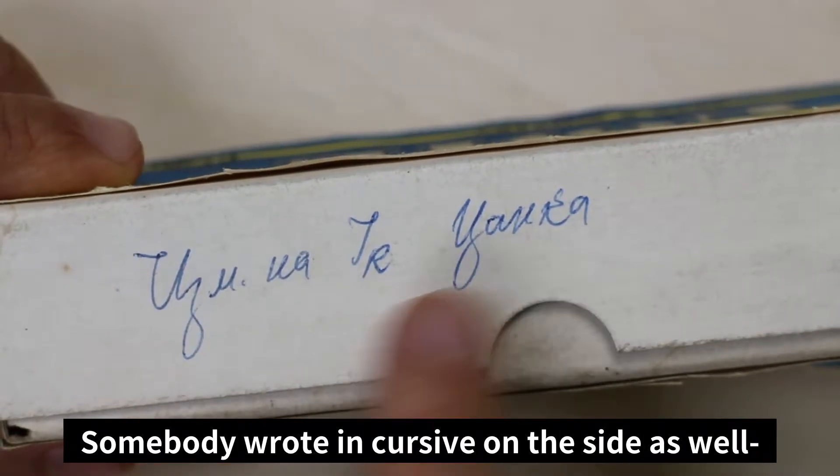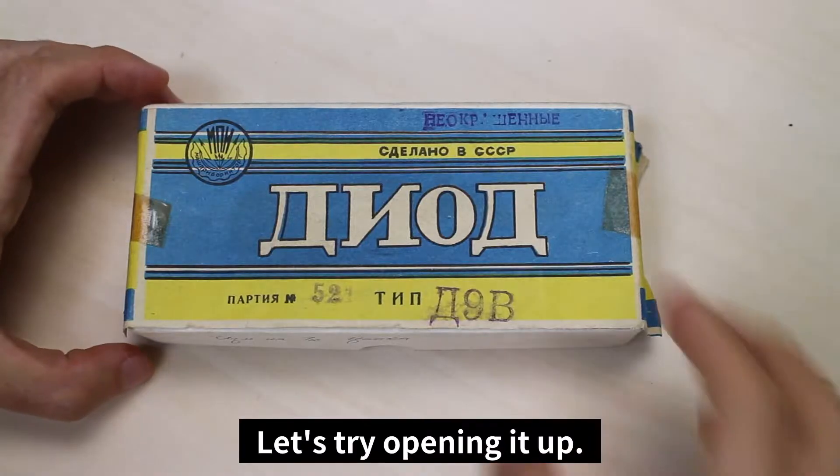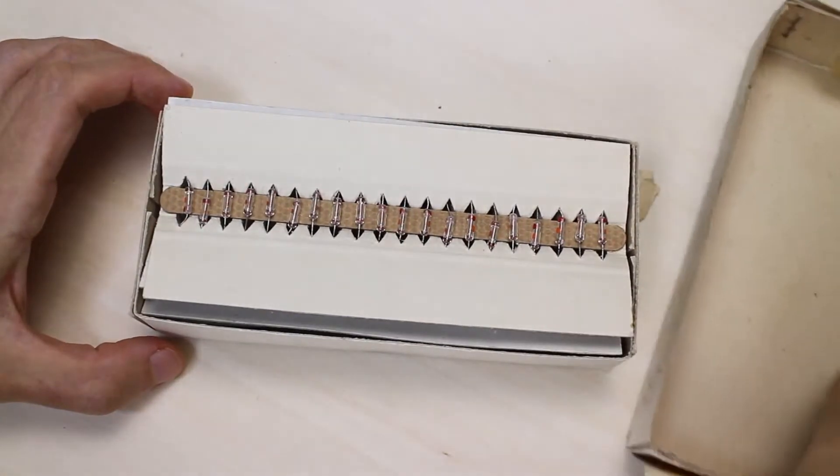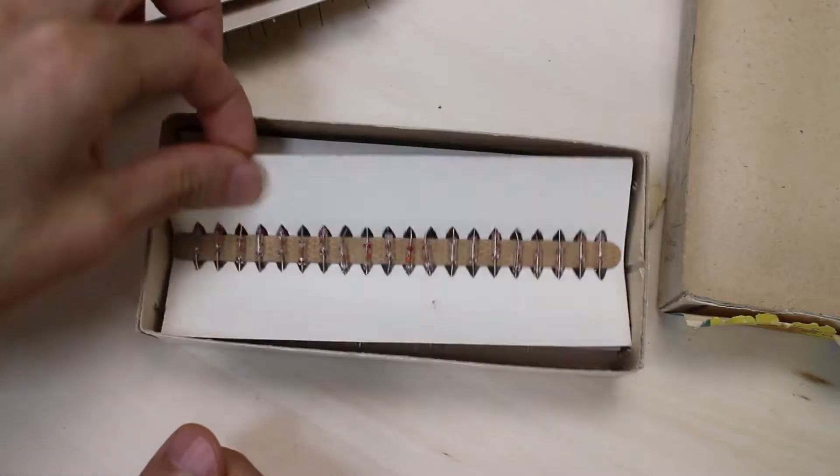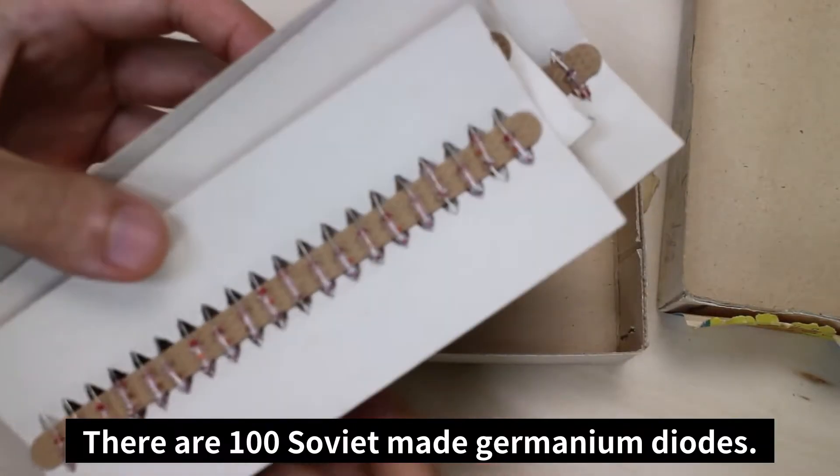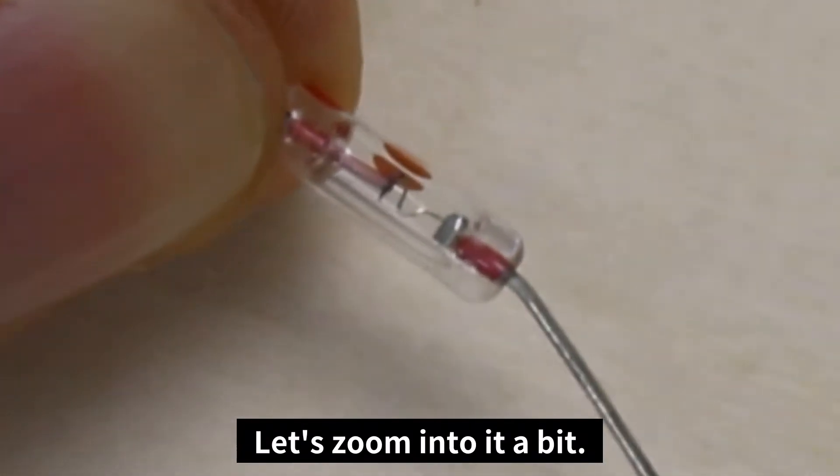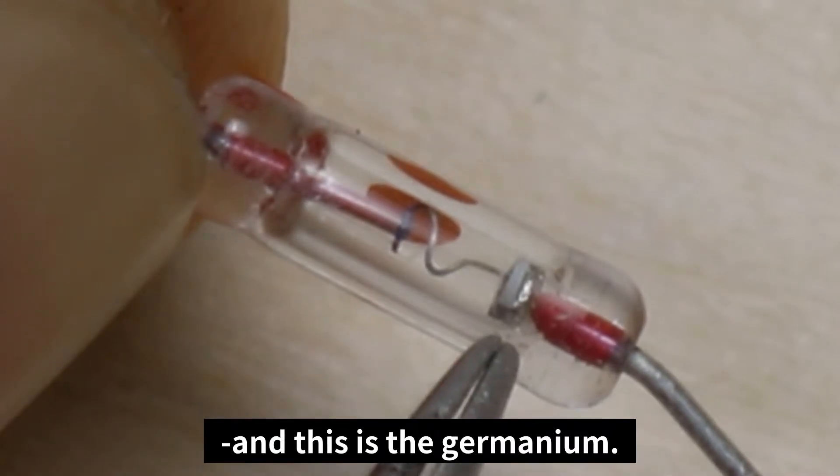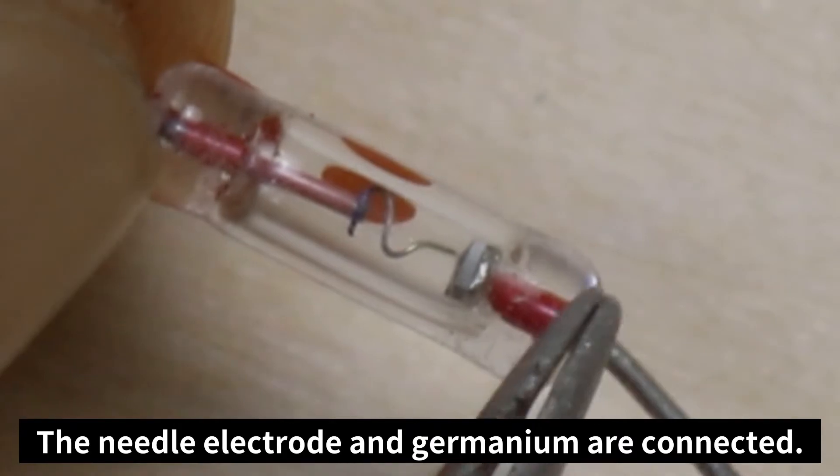Somebody wrote in cursive on the side as well, but it was illegible. Let's try opening it up. There are 100 Soviet made germanium diodes. Let's zoom into it a bit. This is the needle electrode and this is the germanium. The needle electrode and the germanium are connected.